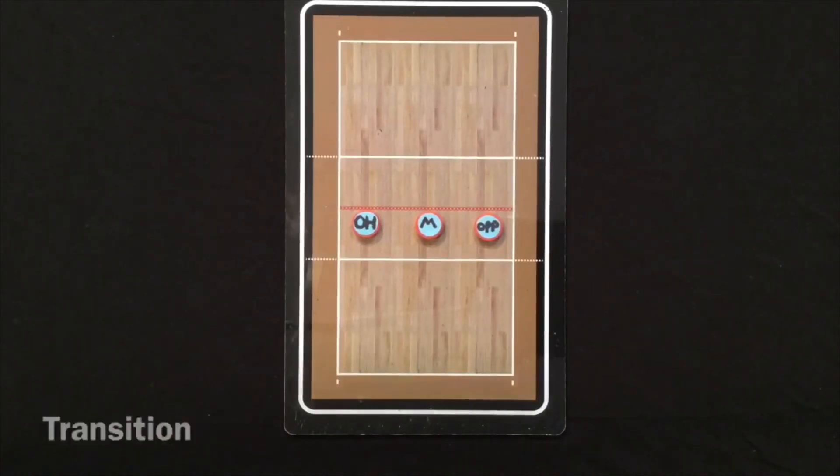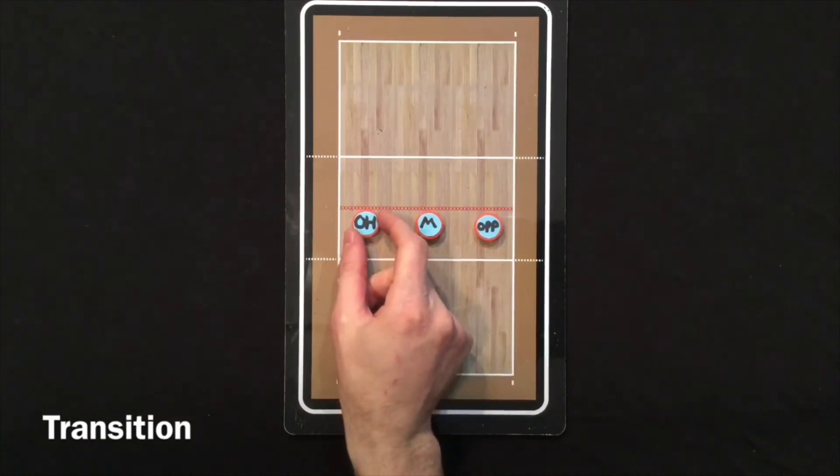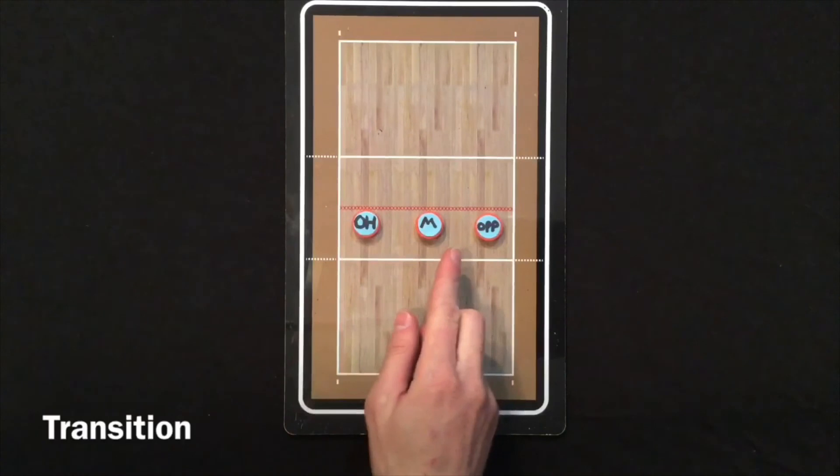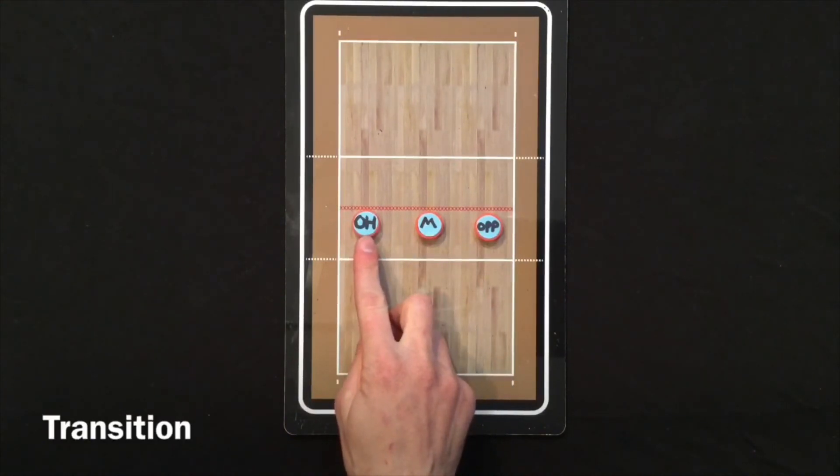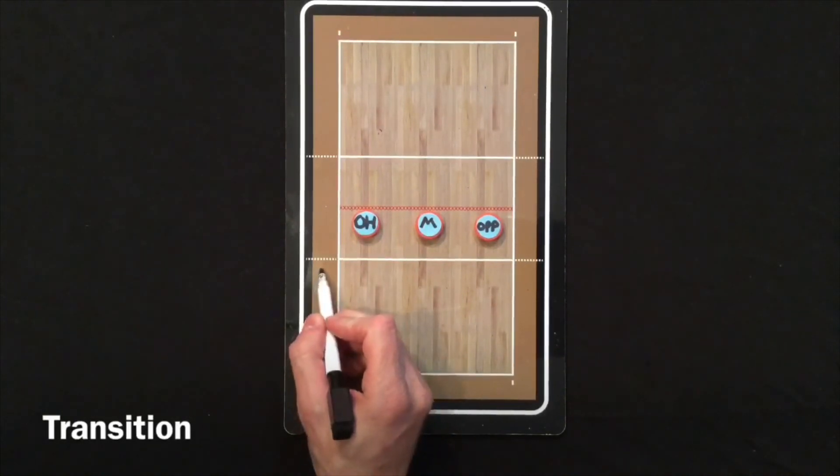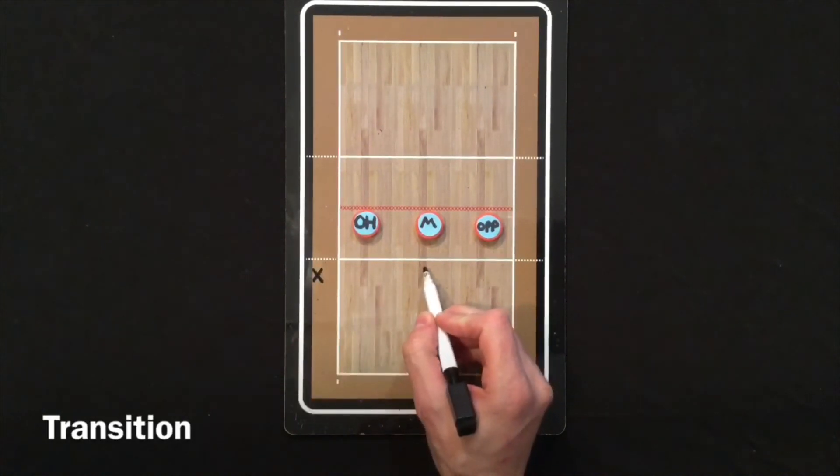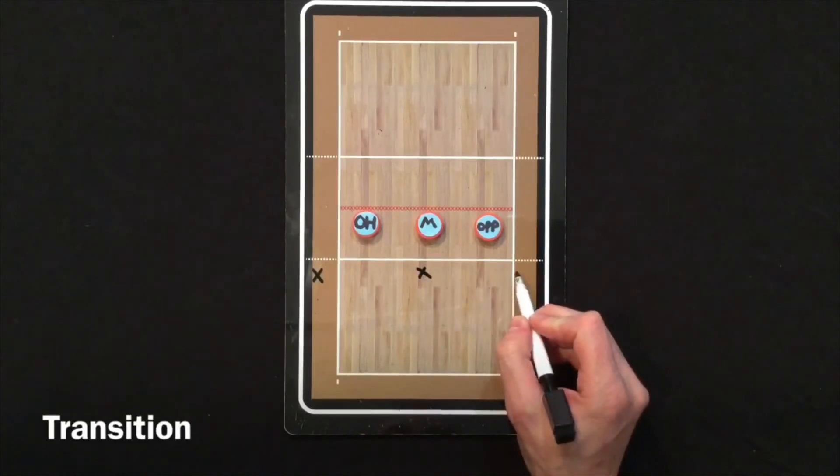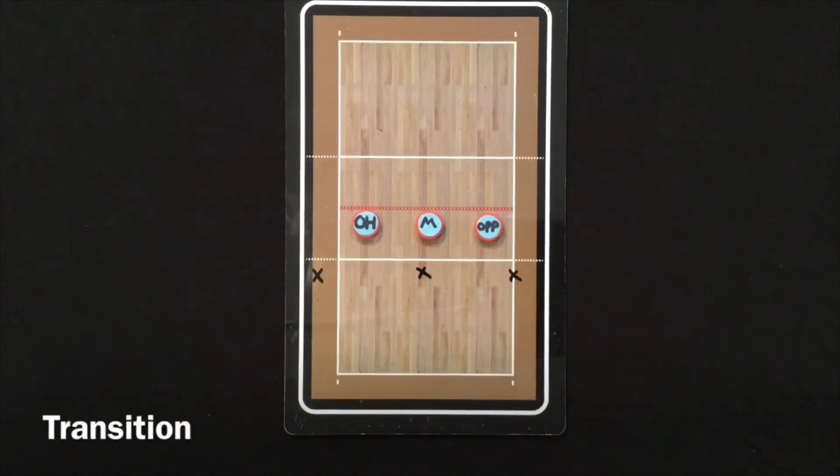One of the biggest areas of improvement I would like to see in our younger players at VCN is transitioning. A lot of times girls forget to even get off the net and then they get set and they're not ready to jump. So basically a transition means turn and run and we're trying to get to our imaginary X spot, trying to get behind the ten foot line ready to take a full approach.